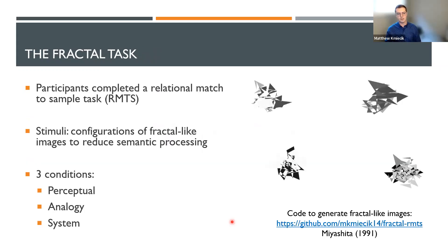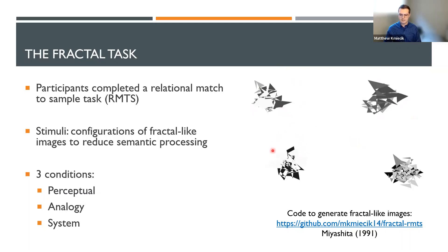What we developed — which took a long time — was a task we're calling the fractal task. It's a relational match-to-sample task in a similar format to the system mapping analogy problems in the Holyoak chapter. However, instead of semantic shapes like shoes and apples, we used fractal-like images to reduce semantic processing. These images look like shattered glass. I adapted an algorithm published by Mishima and colleagues in 1991 and coded it in MATLAB to generate unique grayscale shapes. The code is available on my GitHub.